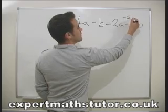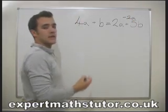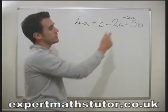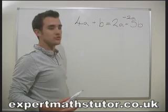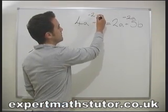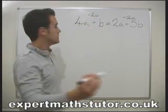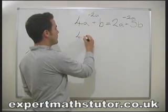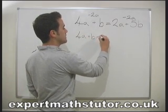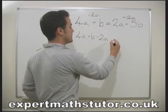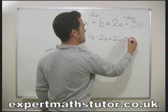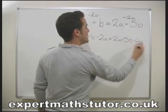On this side we need to take away 2a. Now, whatever we do to the right-hand side of the equals sign, we have to do to the left-hand side as well — we have to do exactly the same thing on either side to keep the same equation. So the new equation we get will be: 4a plus b take away 2a equals 2a plus 5b take away 2a.